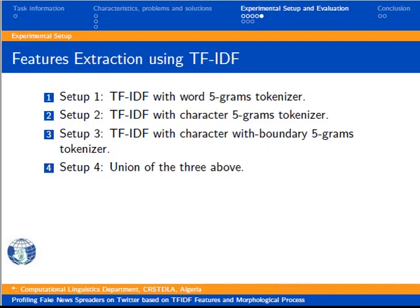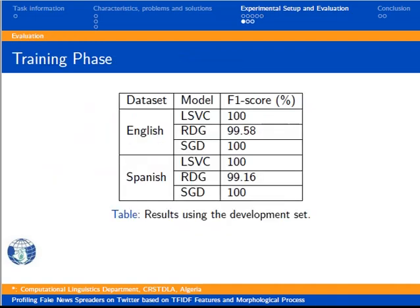In the third stage, we extracted features used to train our model. We use the TF-IDF model and its analyzer properties: word, character, and character with boundary. Finally, we concatenated these three features using the feature union function of the scikit-learn library. We split the training data into two sets to validate our approach: 80% for training, corresponding to 240 XML documents, and 20% for development.